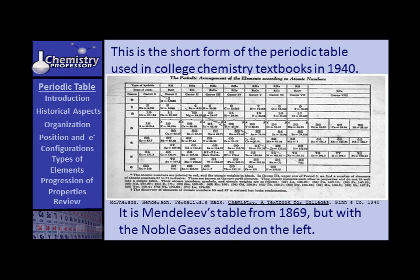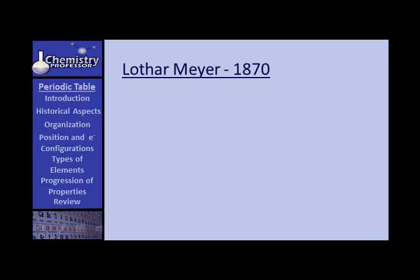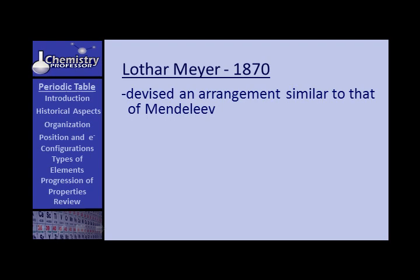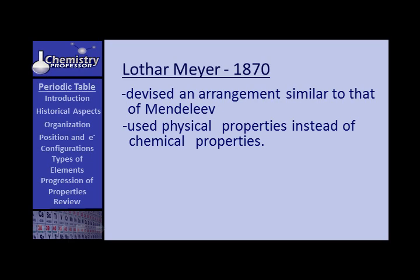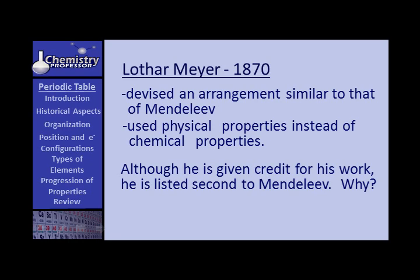Here's a short form of a periodic table that was being used in college textbooks back in 1940 and for a few years after — essentially Mendeleev's table from 1869, but with group 0 on the left containing the noble gases. In Germany, Lothar Meyer, in 1870, devised an arrangement of elements very similar to Mendeleev's, but using physical properties rather than chemical ones. He receives credit for his work, but is listed secondarily to Mendeleev — partly because Mendeleev's work was so predictive of chemical properties, and also because Mendeleev may have published his thoughts first.